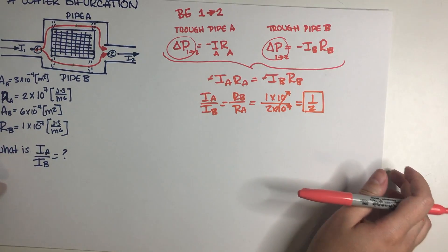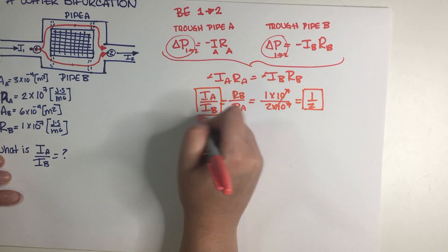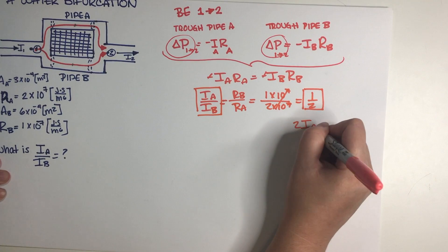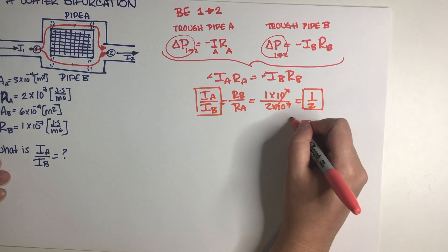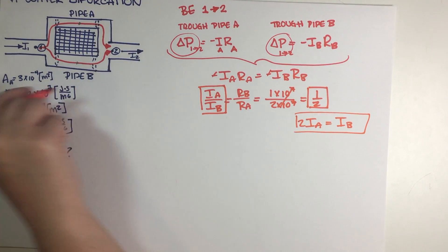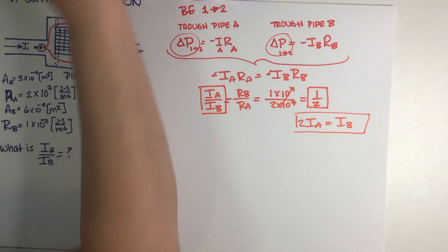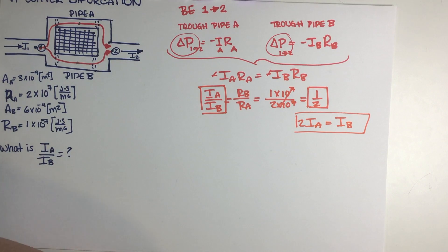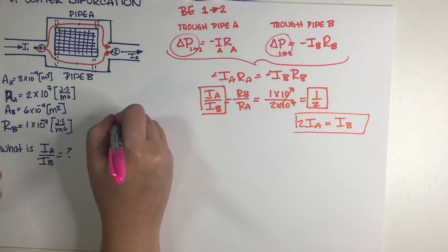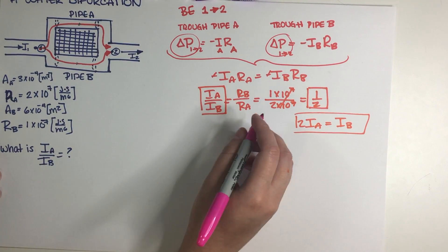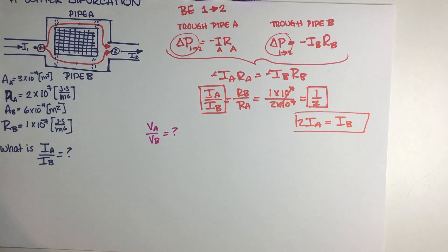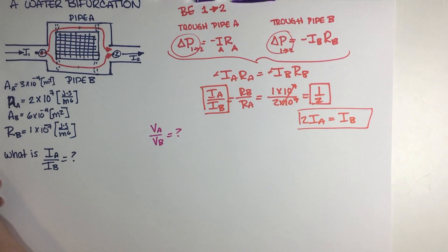So 1/2 is our final answer to part A. This basically means that 2 I_A's make up 1 I_B, which is interesting. Now let's go ahead and solve part B. Part B is asking: what is the ratio of the speed V_A of the water to the speed V_B of the water — so V_A divided by V_B.